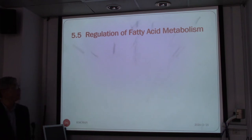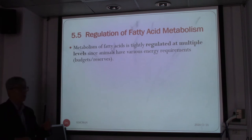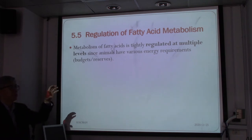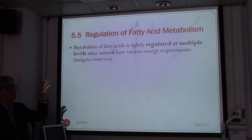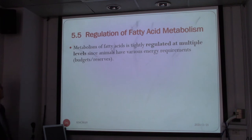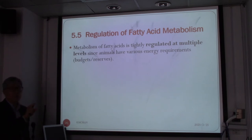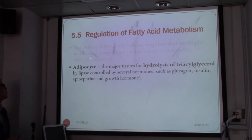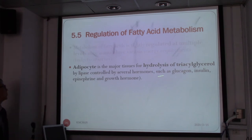We know that carbohydrates — six-carbon sugars — are metabolized by glycolysis, turning the six-carbon sugar into three-carbon pyruvates, and then the pyruvates bring about the formation of fatty acids. This is tightly regulated at multiple levels. Animals have different energy requirements, so we need to control extra sugar. One function of insulin is lipogenesis — to store sugar as fatty acids — and we have a tissue for this storage called adipocytes.